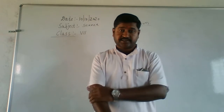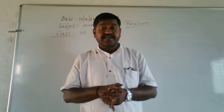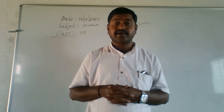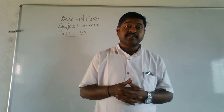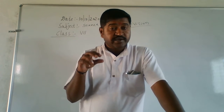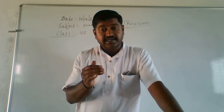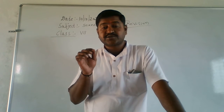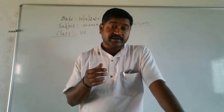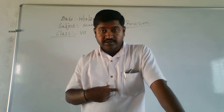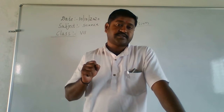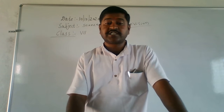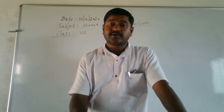Coming to nutrition in ruminants: these animals eat grass and get it digested. Grass cannot be digested by humans as easily. The teeth of ruminants are designed for cutting and chewing grass. There is a special chamber called the rumen which helps digest the grass. The partially digested food called cud is brought back to the mouth for rechewing. Ruminants have four chambers in their stomach.